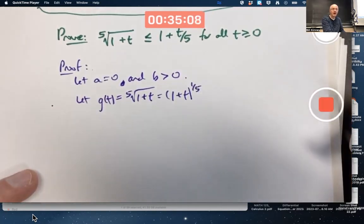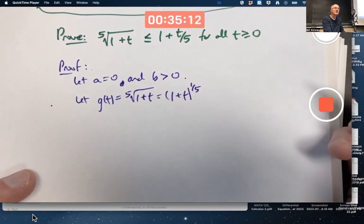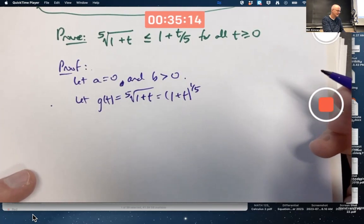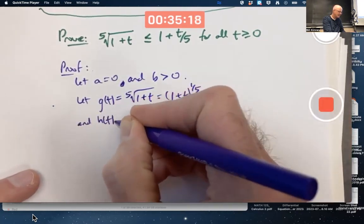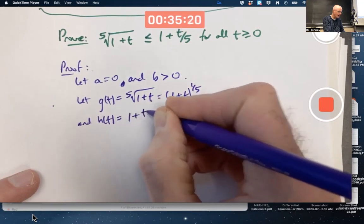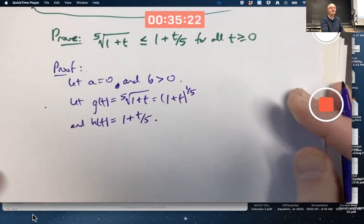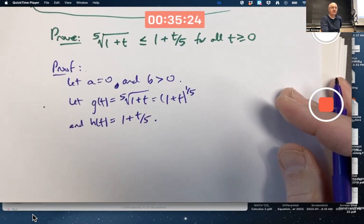By the way, what I'm showing you here I have put on exams in the past, typically with some help. And h(t) be the linear function. I'm trying to set myself up to be able to use the racetrack principle.